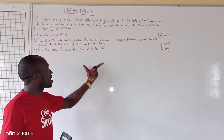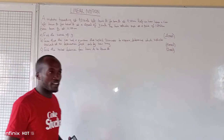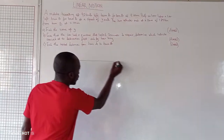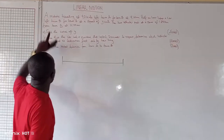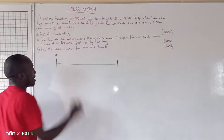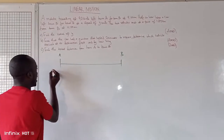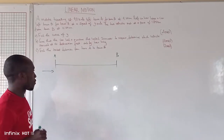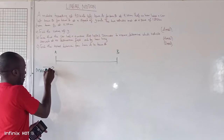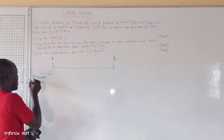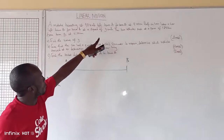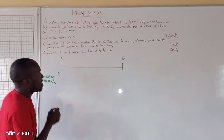When you have such information, you illustrate it in a straight line showing the distance between the two towns. There is a matatu leaving town A for town B — so we have town A and town B, and this is the direction of motion of the matatu. The speed of the matatu is 90 km per hour, and the departure time of the matatu is 9 am.